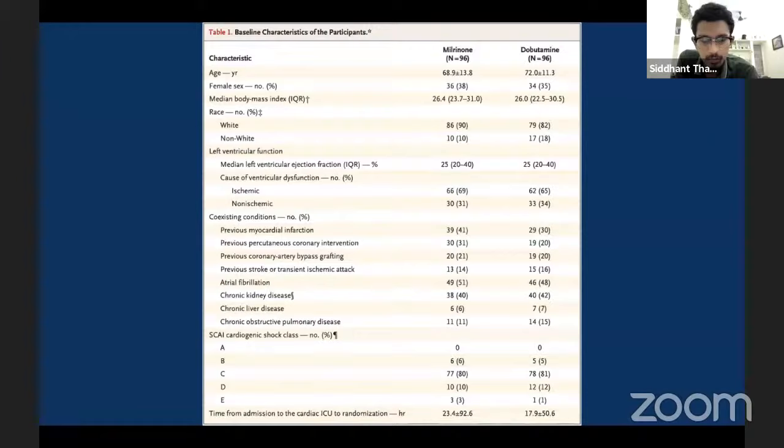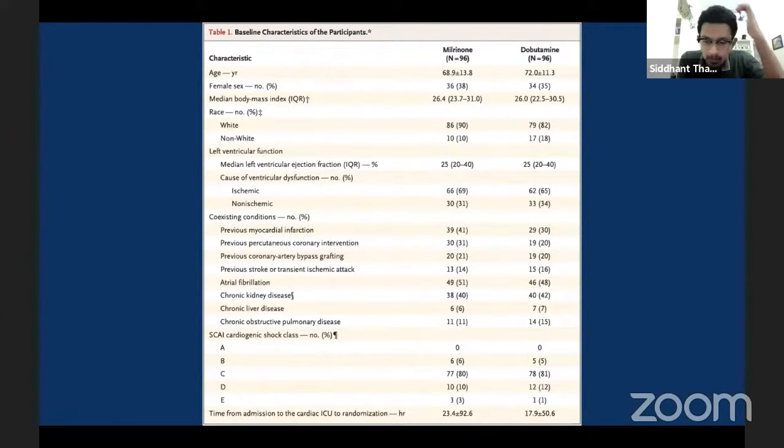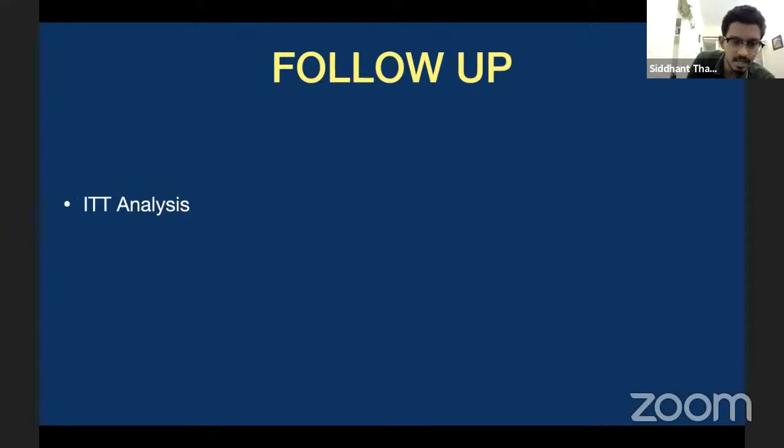Now you know this is a randomized control trial and the randomization has worked perfectly fine. You need to know what was the follow-up — we look at something called attrition. This is where the role of intention to treat analysis or a per protocol analysis comes in. If you look at the flowcharts here...